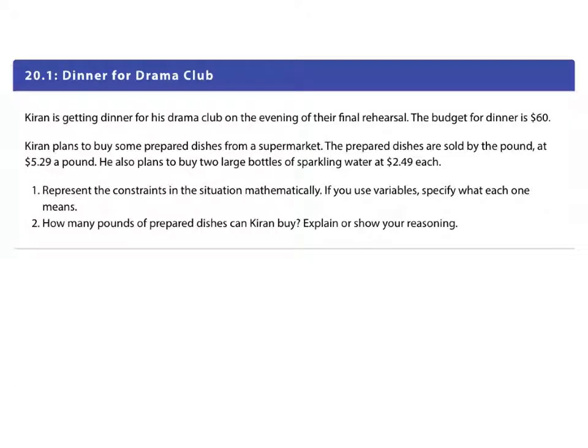Hey algebra, we are in Unit 2 Lesson 20 talking about a dinner party. We're gonna get dinner for a drama club on the evening of their first rehearsal. The budget for dinner is sixty dollars. Karen plans to buy some prepared dishes from the supermarket. The prepared dishes are sold by the pound at $5.29 a pound. He also plans to buy two large bottles of sparkling water at $2.49 a piece.